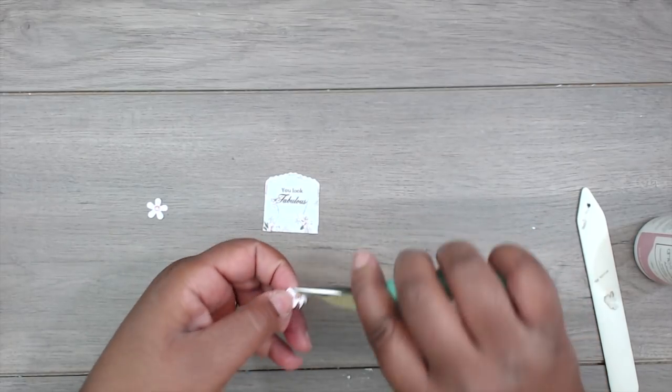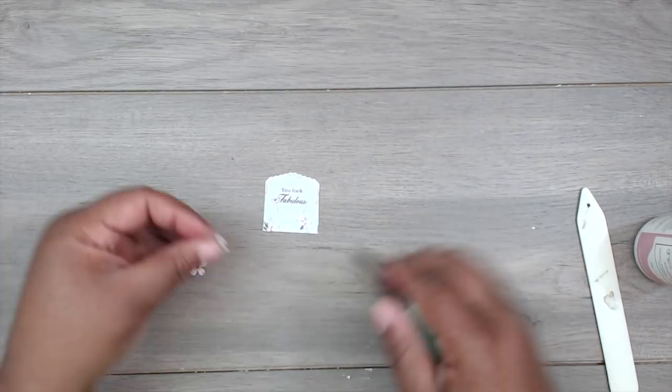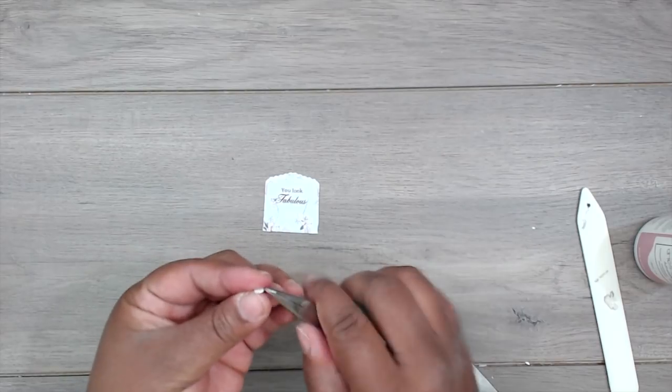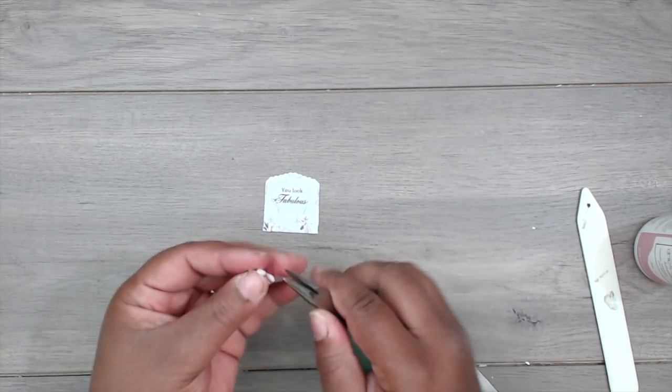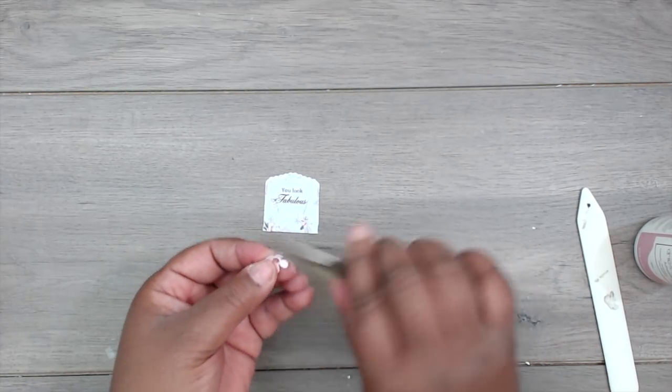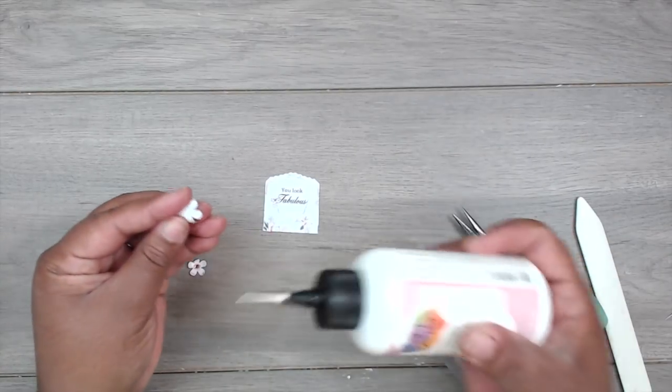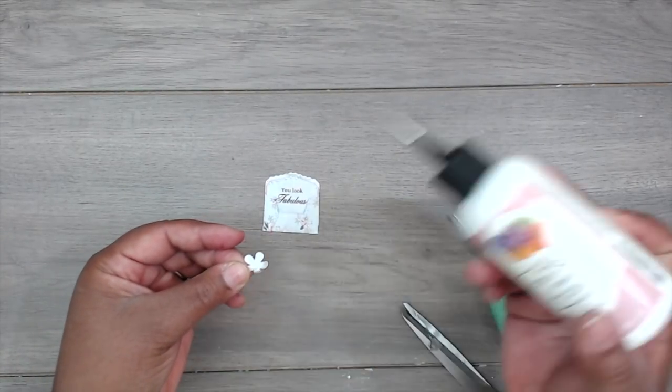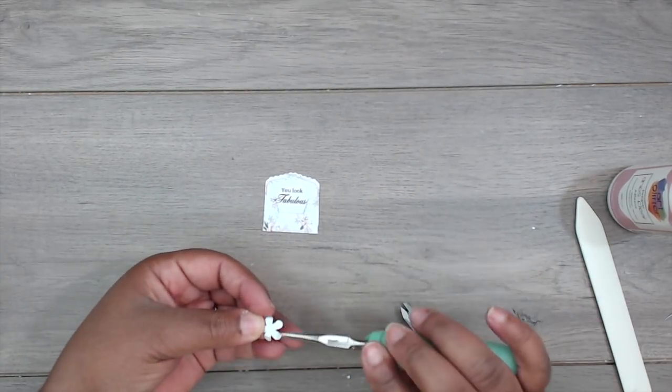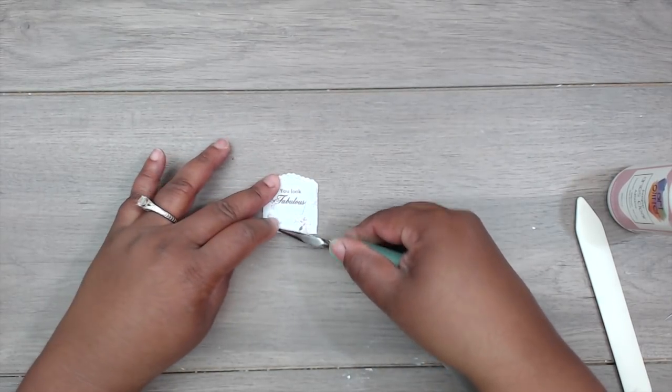I'm going to do that for both of them real quick just to give it a little bit of texture. I'll add a dot of the glue to the back, stick that down, and then I'll do the second one.